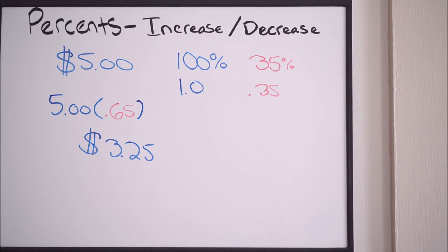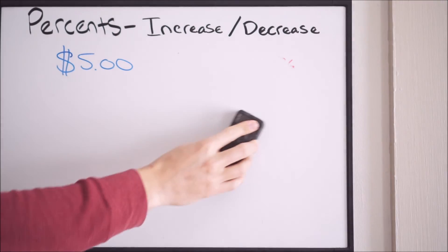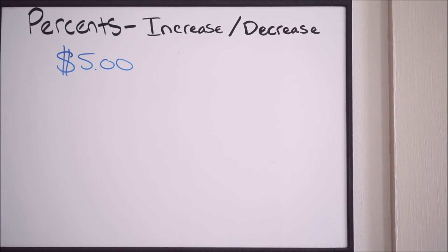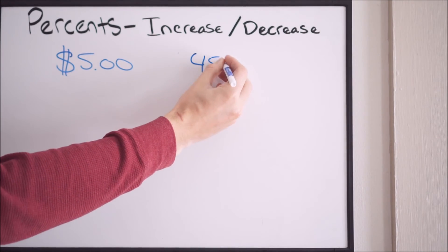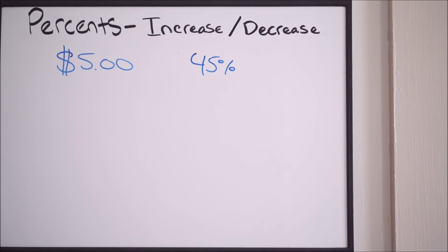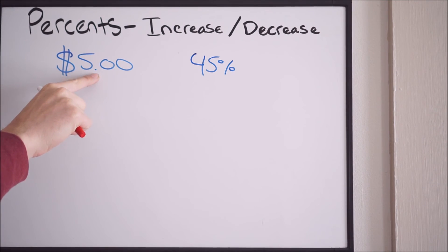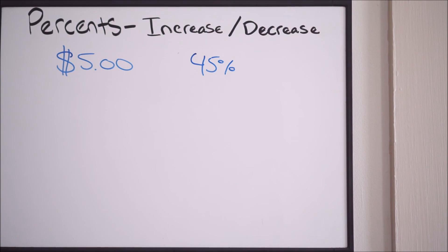Now let's talk about some tricks you can use — how you can do this in your head mentally. Let's say you want to know what 45% of $5 is going to be. We know that for 10%, all you simply have to do is move the decimal point over one place value. So if I want to take 10% of $5, I move the decimal over one place to the left and I get 0.5. So 0.5 is 10% of $5 — we just did that in our head.